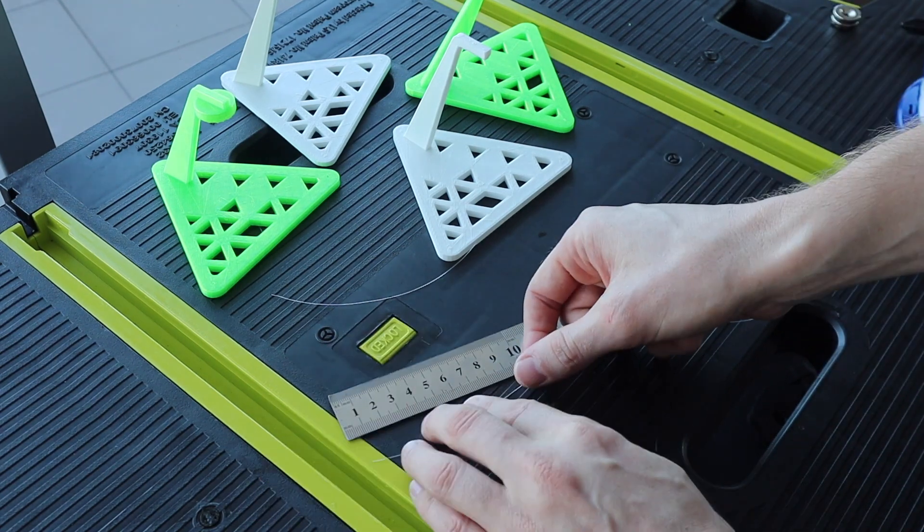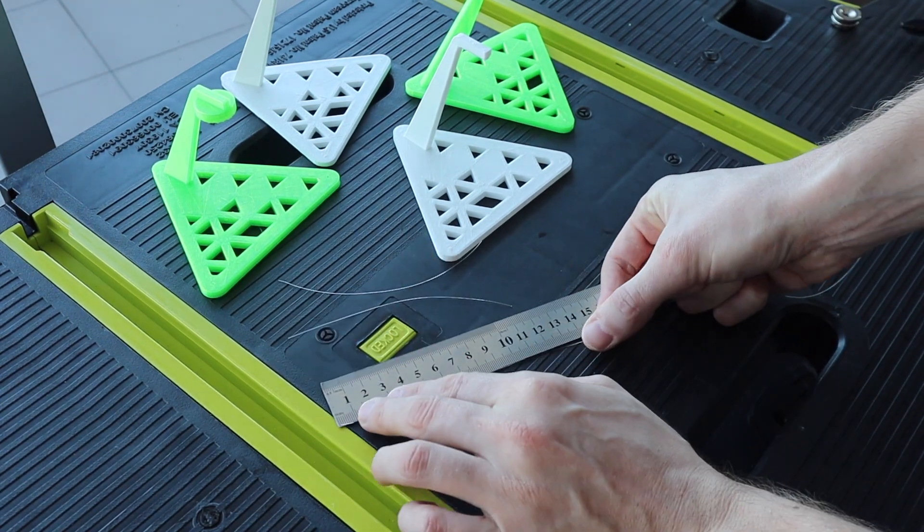I used fishing line because it doesn't fray and it's a bit more rigid than cotton or string, so it's easier to thread through the holes.